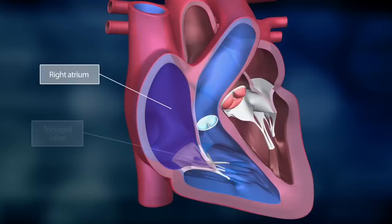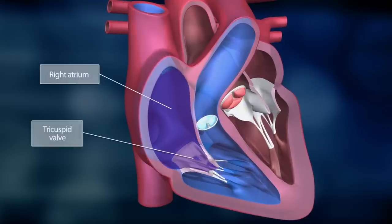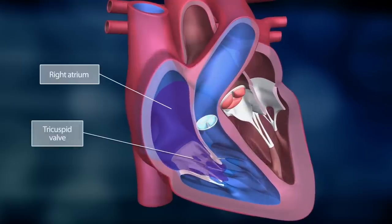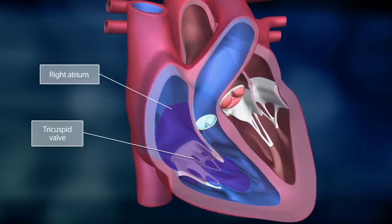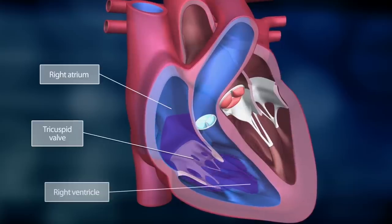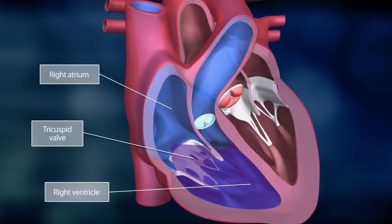it contracts and a valve, the tricuspid valve, opens, allowing the blood to flow into the right ventricle. This is called atrial systole.